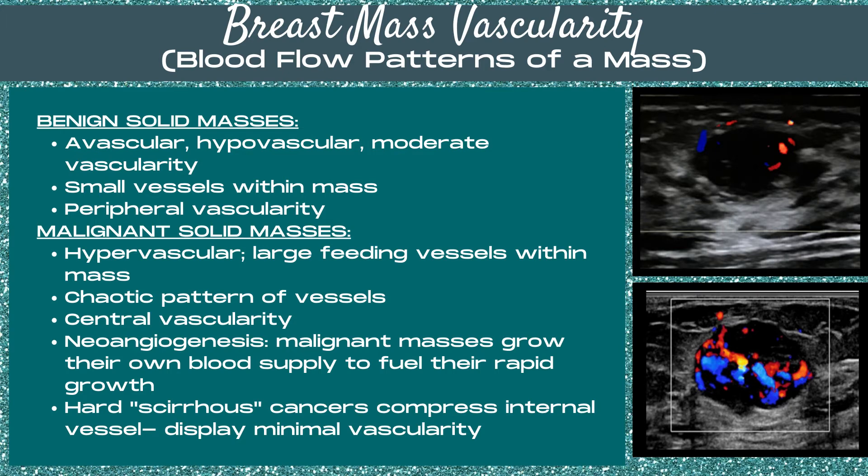This is based on the concept of neoangiogenesis, where malignant masses grow their own blood supply to fuel their rapid growth. Note that hard or scirrhous cancers compress these internal vessels and display minimal vascularity. Because vessels are so small in the breast, you can have a malignant mass that does not display hypervascularity.